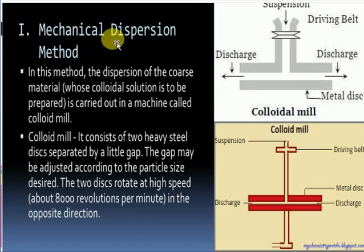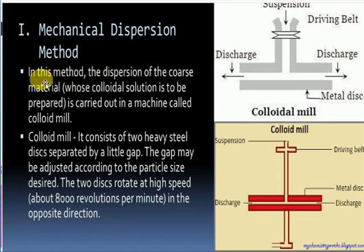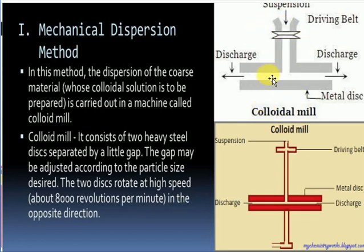The mechanical dispersion method uses an instrument where the dispersion medium and dispersion phase are placed together. A rotator converts those two components into a colloidal solution. This method carries out dispersion of the coarse material in a machine called a colloidal mill, where a small amount of solute plus solvent — the dispersion medium — is rotated to convert them into a colloidal solution.